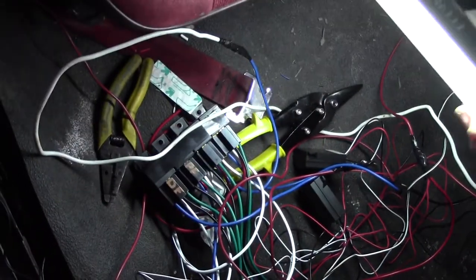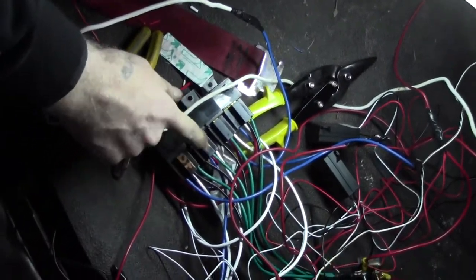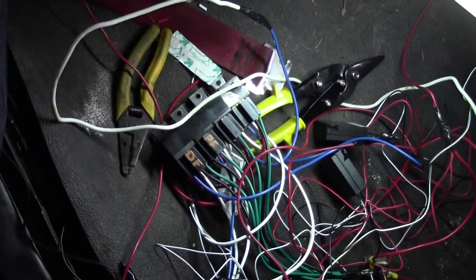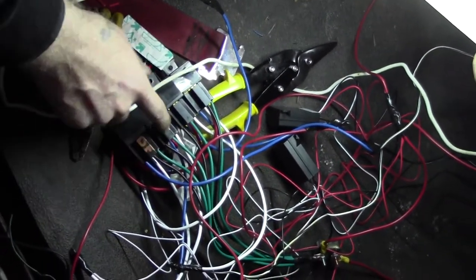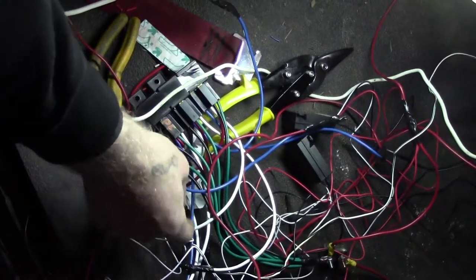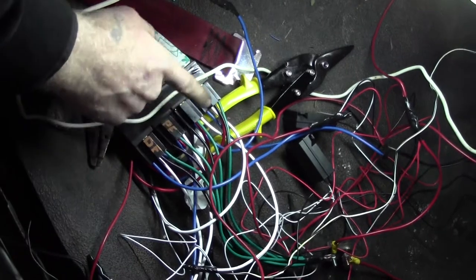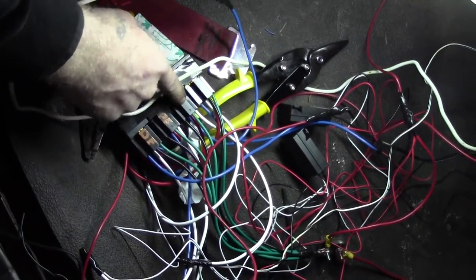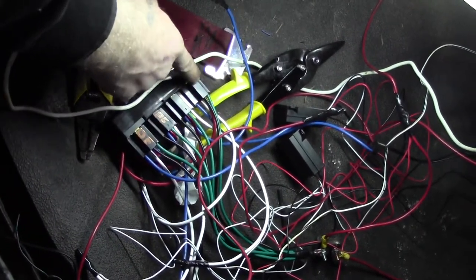There we go, this is DF, PF. We were labeling these so that each one, you know which relay goes to what door. Driver front, passenger front. Yeah, and this will be driver back and passenger back.